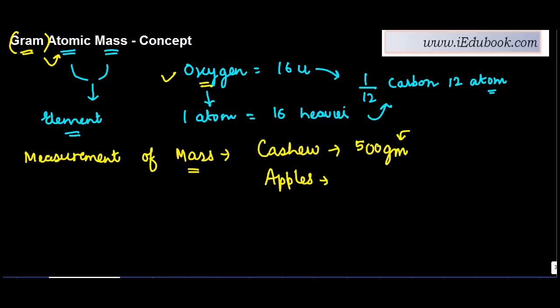When this atomic mass of an element, in the case of oxygen, is represented in grams, it is known as gram atomic mass. If I have to write down the gram atomic mass of oxygen, the atomic mass was 16U. To convert this into grams, we just replace this U.